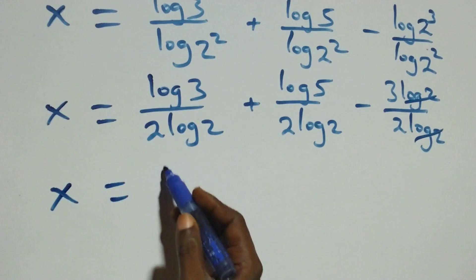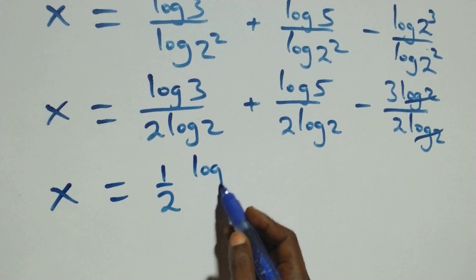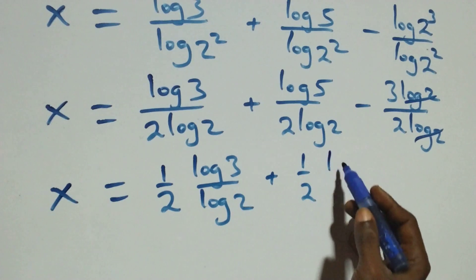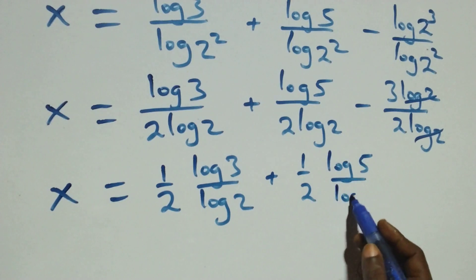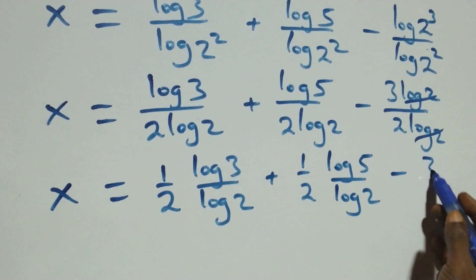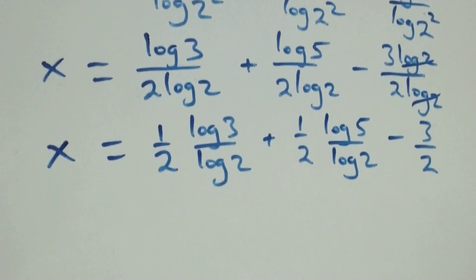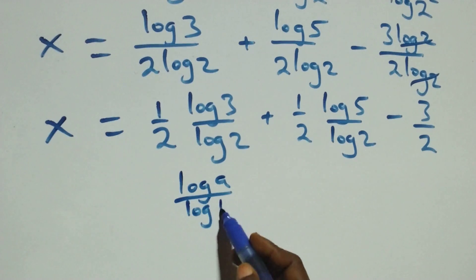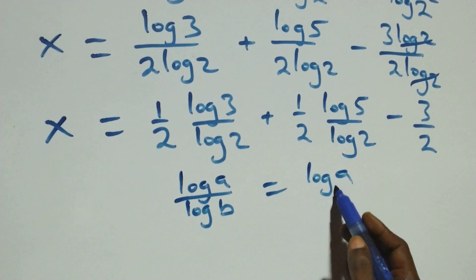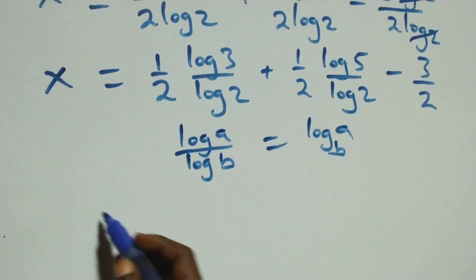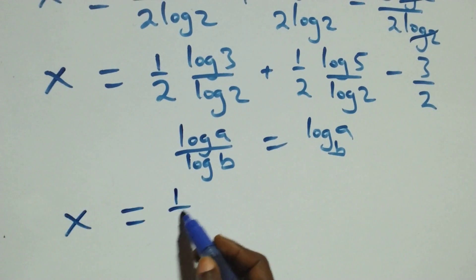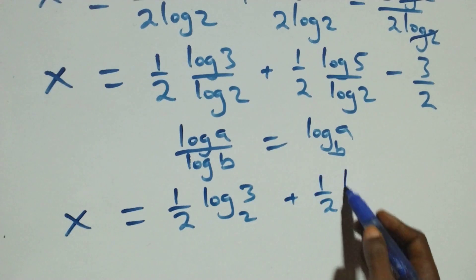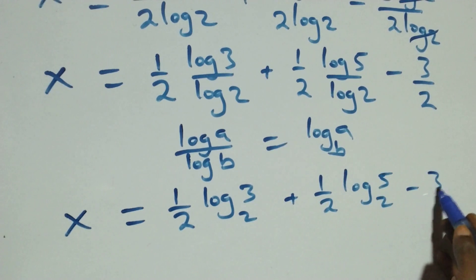We can write x equals one over 2 multiplied by log 3 over log 2, plus one over 2 multiplied by log 5 over log 2, minus 3 over 2. We are writing in change of base form: log a over log b is the same as log a to base b. So x equals one half log₂3 plus one half log₂5 minus three over two.